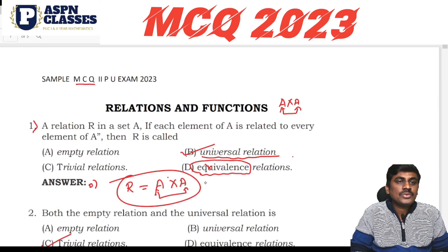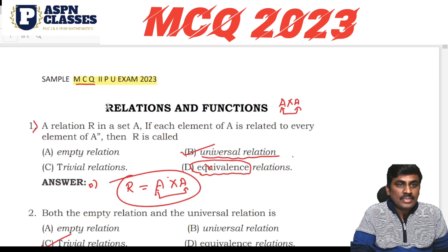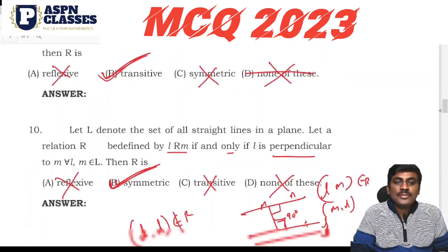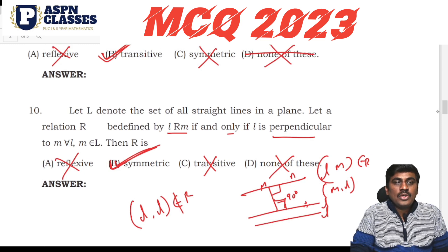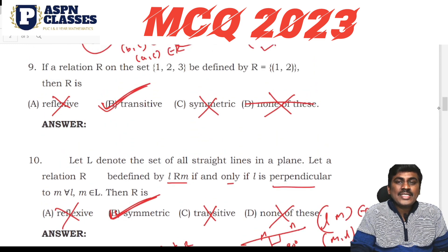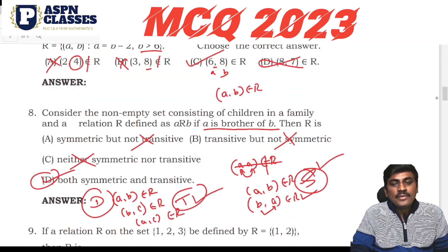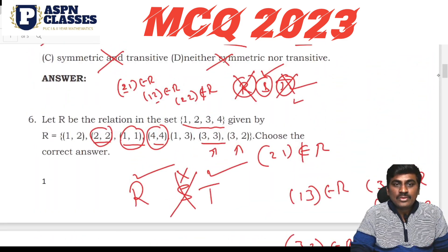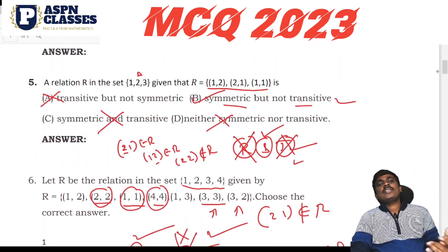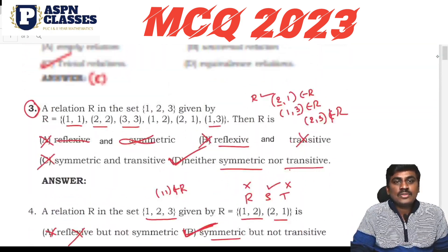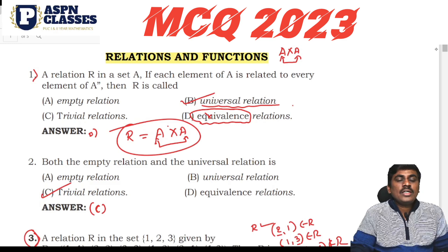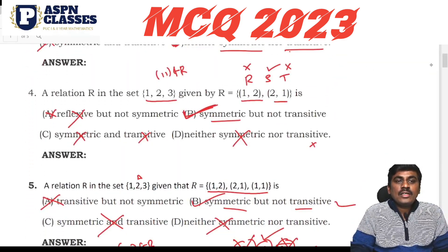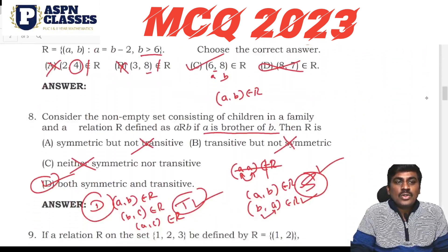Hi friends, welcome to the ASPN classes. Last class we had MCQ discussion. Now, chapter-wise, starting second year exam preparation — first chapter: Relations and Functions. Again, 10 questions were completed. For new students, click the I-button to watch previous videos. Some students messaged asking about exercise questions, so all exercise questions will be covered.